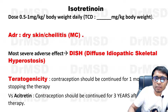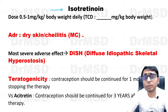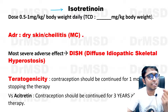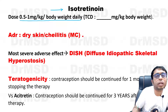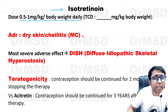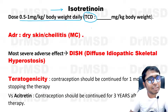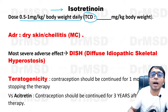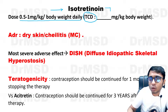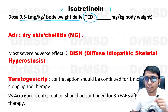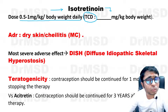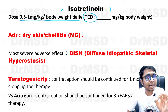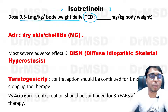Regarding isotretinoin, one more question. This is a very important drug of choice for grade 4 acne, that is the nodulocystic type of acne. The dosage is 0.5 to 1 milligram per kilogram body weight daily. You also need to know one more numerical which is called TCD — total cumulative dose. What is the total cumulative dose for isotretinoin? Please put it in the comment section.